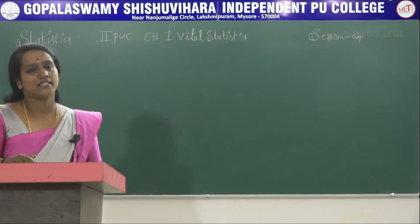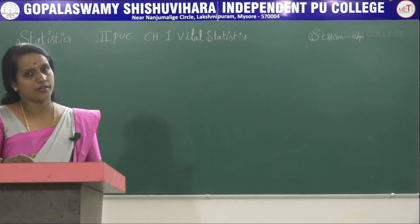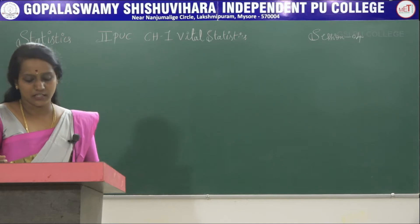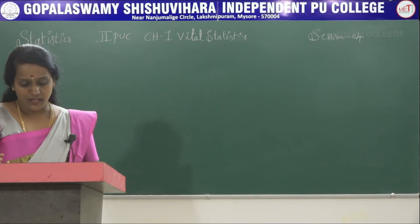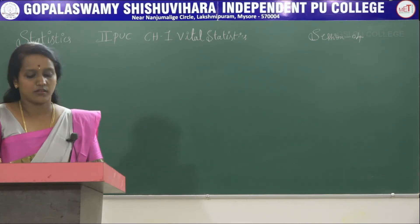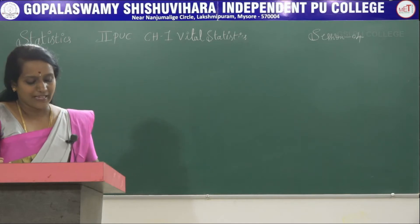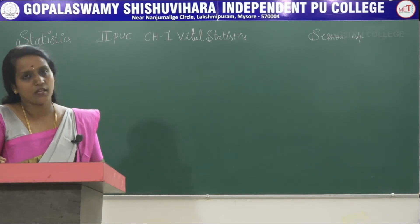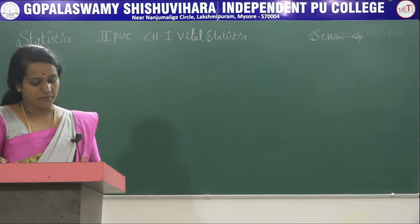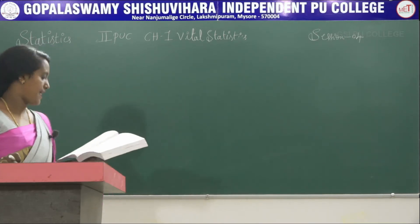Welcome to the class. In this class we are covering vital statistics, specifically the next topic: reproductive rates. In reproductive rates we have two types — Gross Reproductive Rate (GRR) and Net Reproductive Rate (NRR). Before solving for GRR and NRR, we have to calculate WSFR, that is Women's Specific Fertility Rate. Based on that, GRR and NRR can be calculated. Let's solve some problems on GRR and NRR.